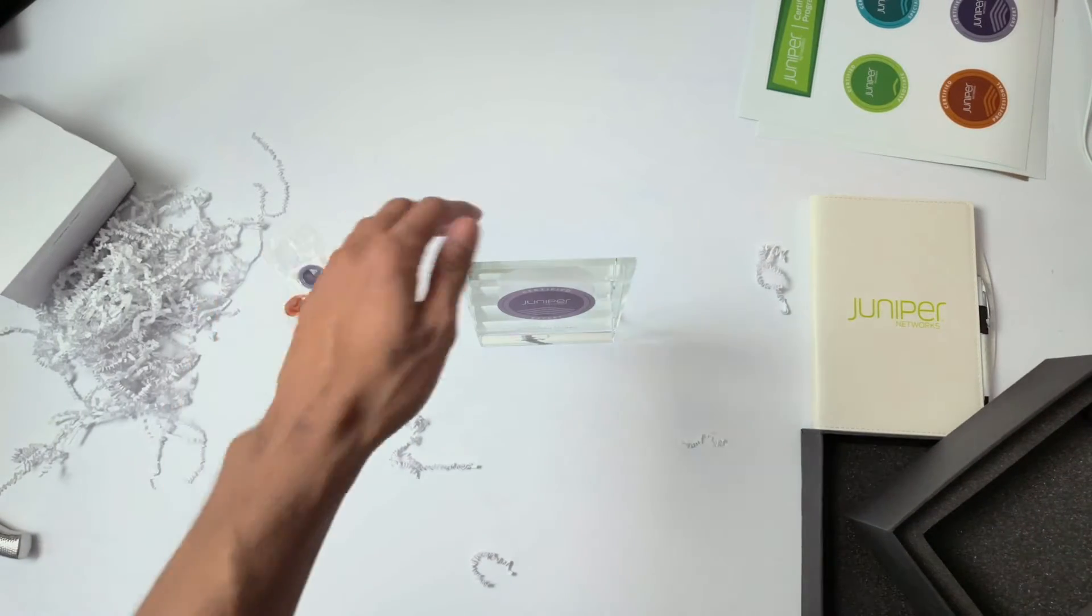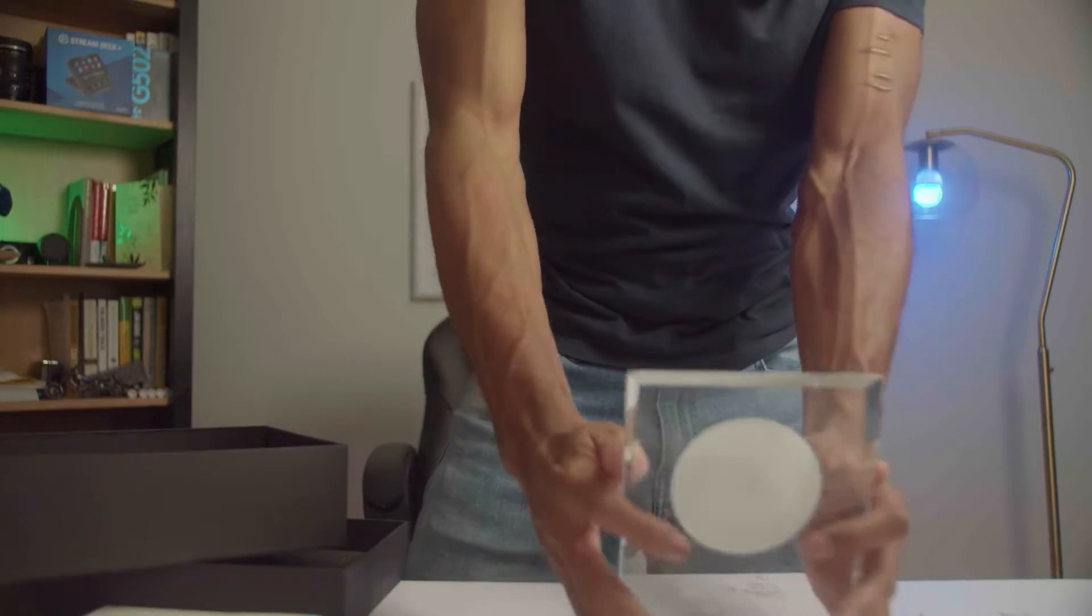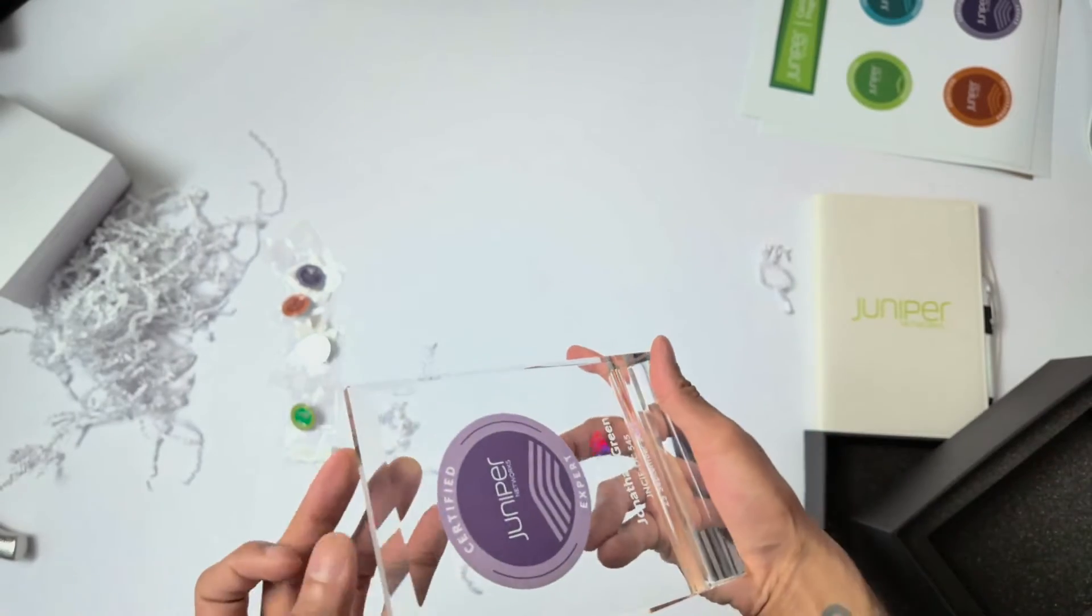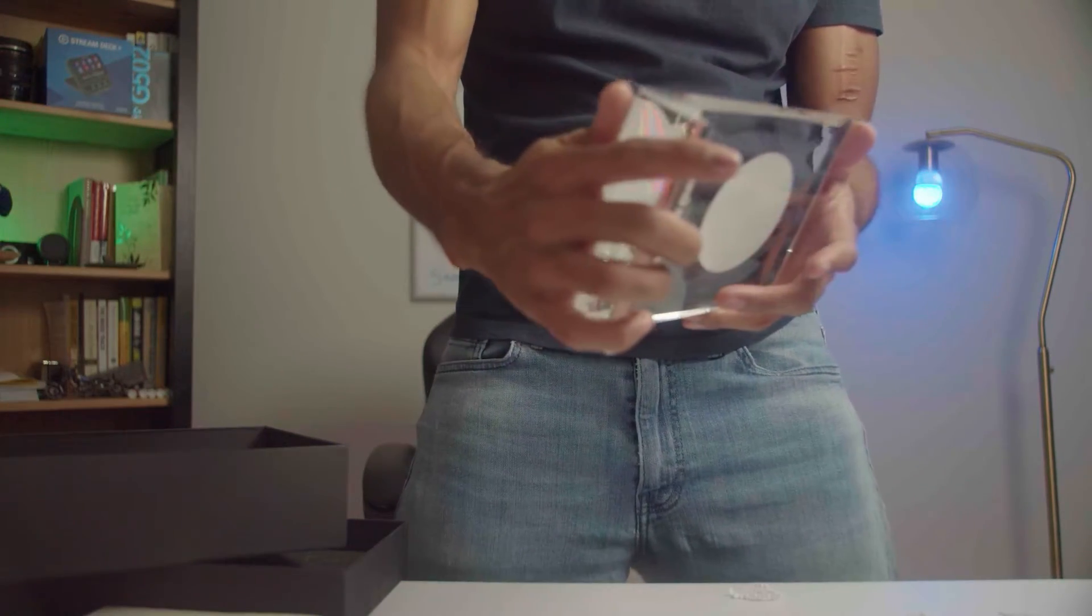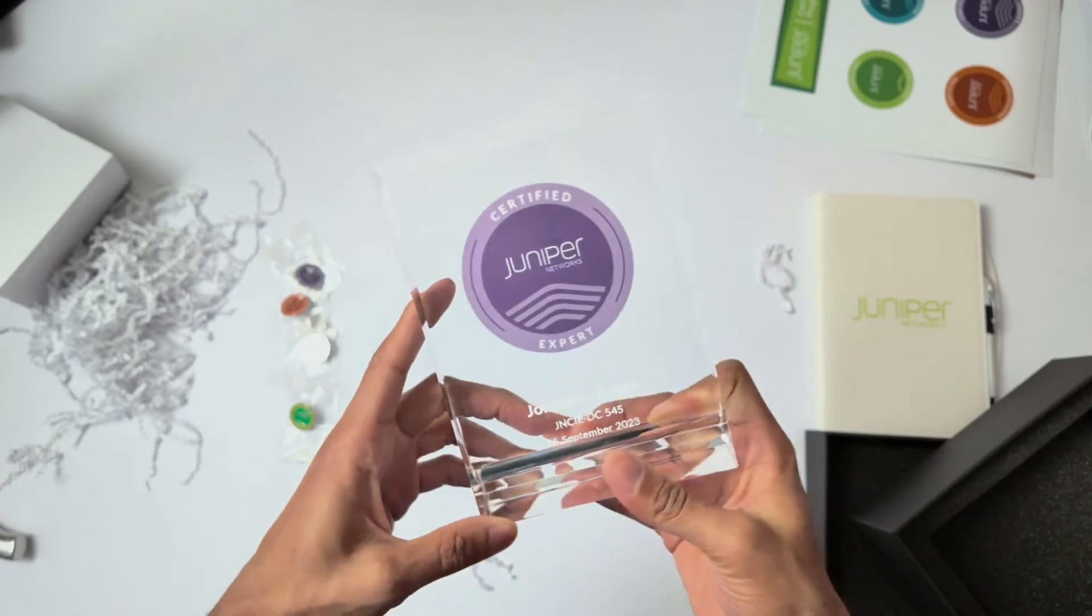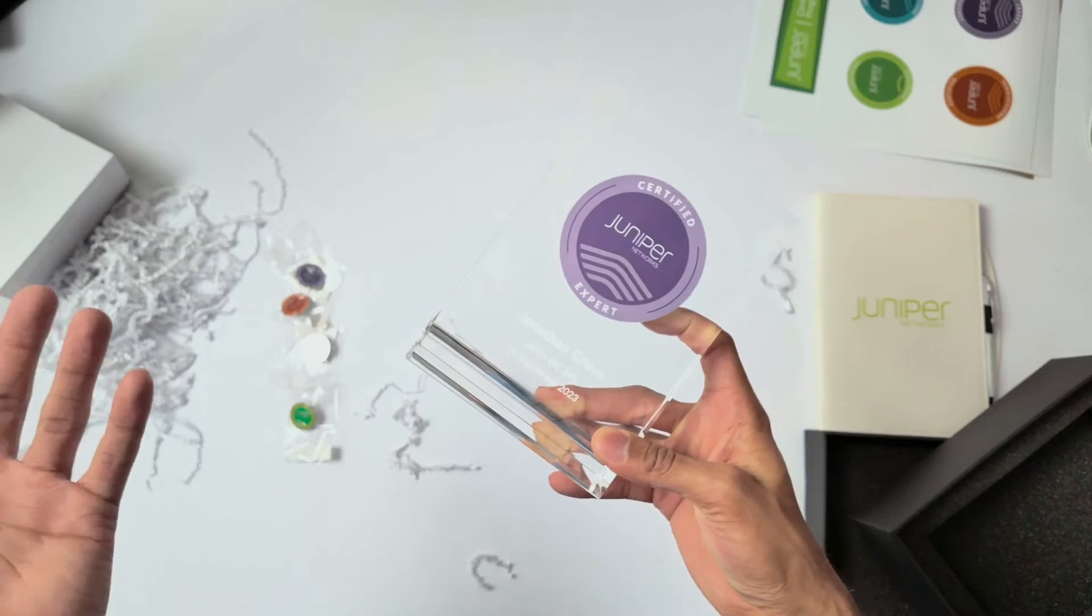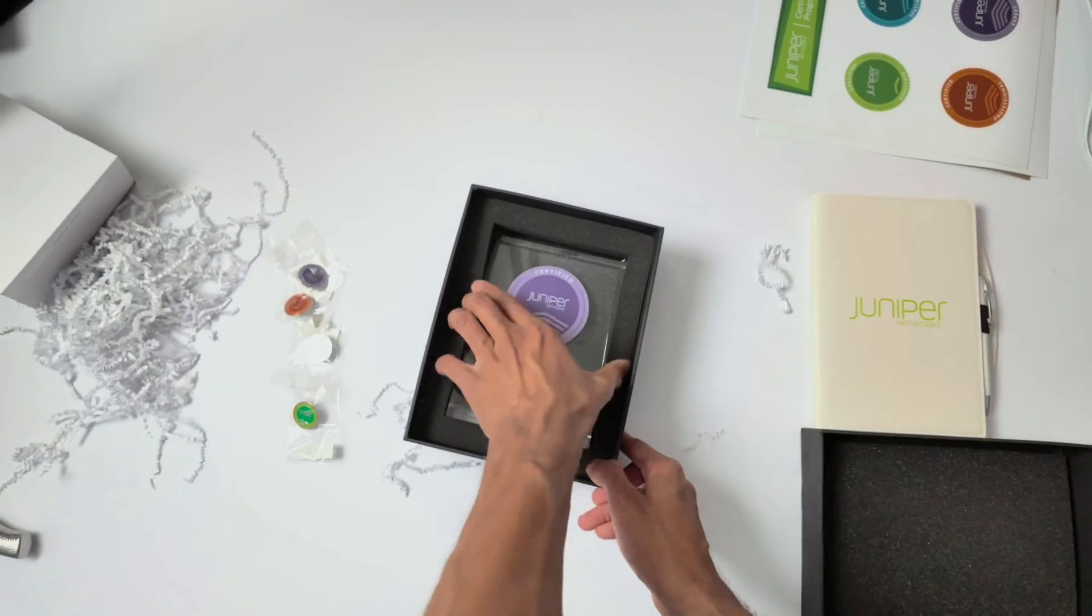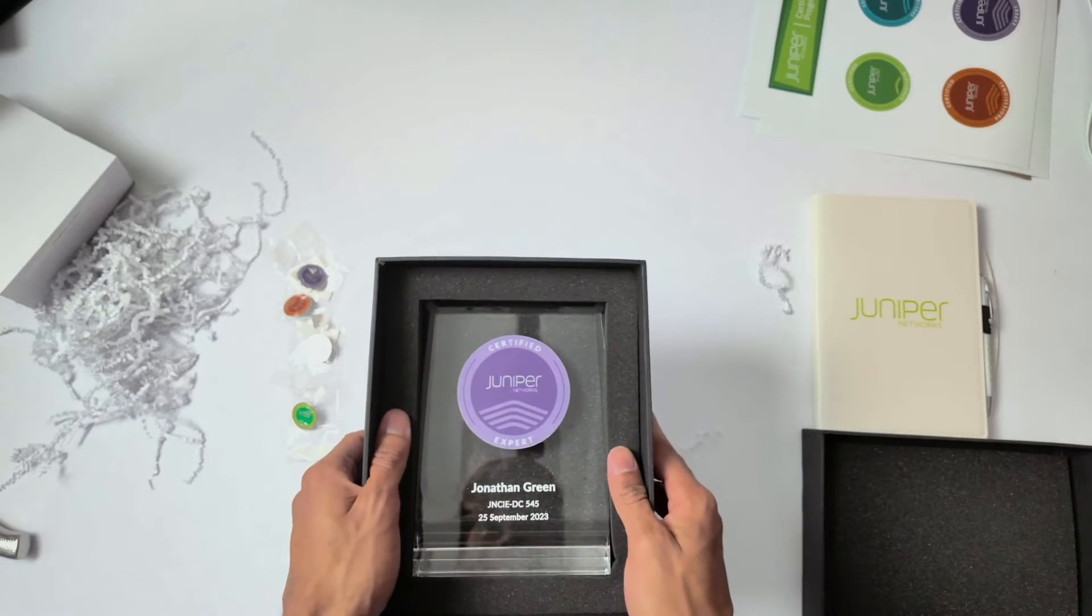If I turn it towards the camera, I'm not sure if you can actually see it from that angle, but that's pretty freaking cool, right? That's nice. And it's glass. So hopefully in the video, it's actually capturing what this looks like. JNCIE DC 545. I'm gonna go ahead and put that back in there, which is actually a pretty good place for it.